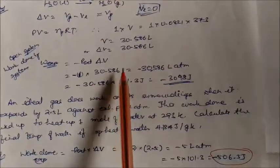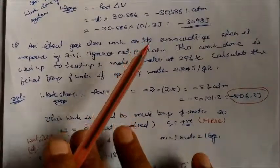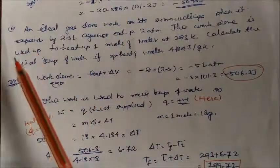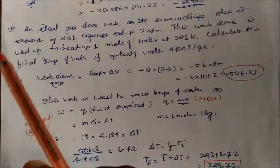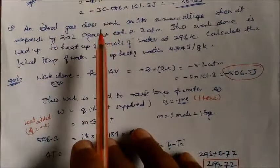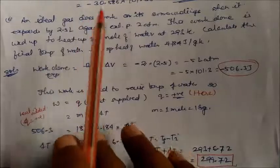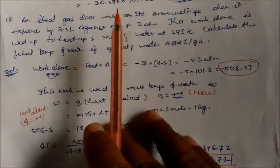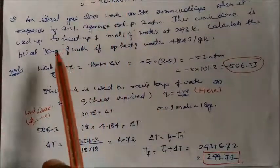Problem 3: 200 joules of work is done on the system, and 140 joules of heat is given out. So q = −140 (heat released), w = +200 (work done on system). ΔU = −140 + 200 = 60 joules. Work done on the system is positive.